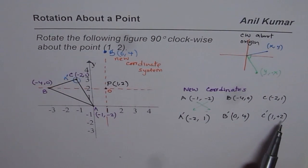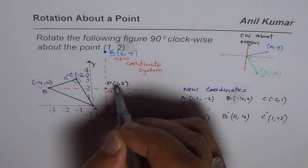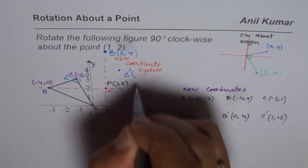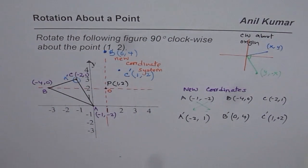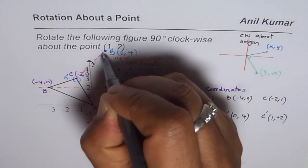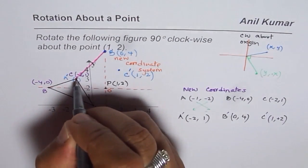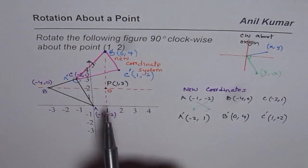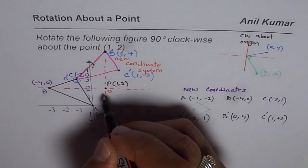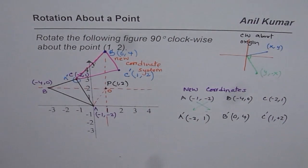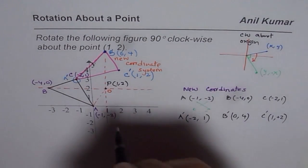C' will be 1 to the right and 2 up, so the point C' is at (1, 2) in the new system. Joining these points A', B', C', we get our transformed rotation. Let's connect them with straight lines. So this is what we get — it's a rotation that gives you a congruent figure. As you can clearly see, this is rotated 90 degrees. If you connect A and A', they are at 90 degrees clockwise.